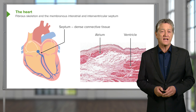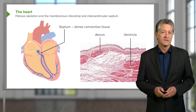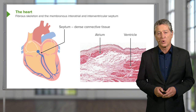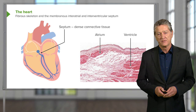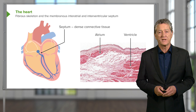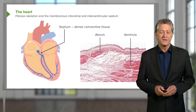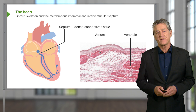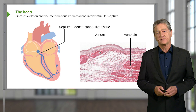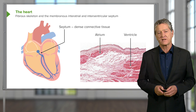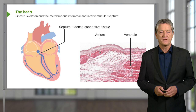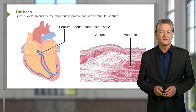This membrane allows a delay, which is very important between the filling of the ventricle and the contraction of the atrium. It stops the wave of impulse and therefore the wave of contraction going directly from the atrial muscle to the ventricular muscle. So it really acts as an electrical isolation tissue — very important.